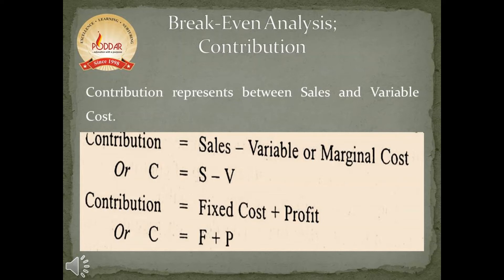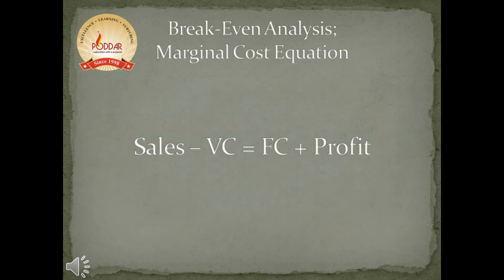The first method of break-even analysis is contribution, which represents the difference between sales and variable cost. Equationally, contribution equals sales minus variable cost. We can also find contribution with the help of fixed cost and profit: adding fixed cost and profit gives the contribution. We can also say from the profit statement that sales minus variable cost equals fixed cost plus profit, which is regarded as the marginal cost equation.